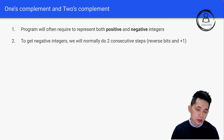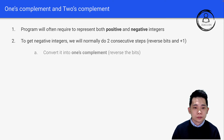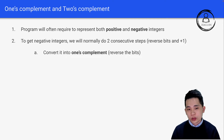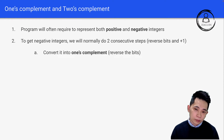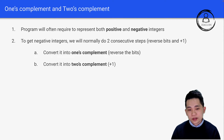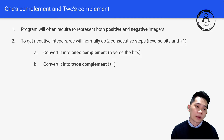We'll first reverse the bits, and then do a plus one. So first we reverse the bits to convert the number into one's complement form. The next step is converting it into two's complement, which is the final answer — we just do a plus one after step A.